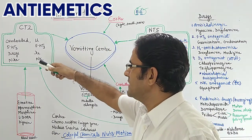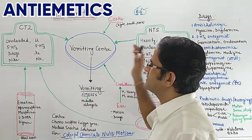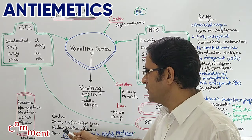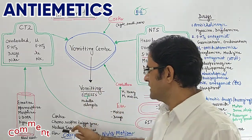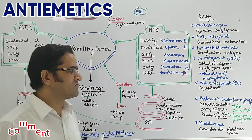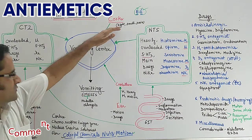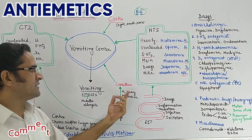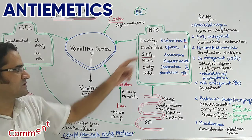The three or four main relay centers which send nerve impulses or information to the vomiting center to cause emesis are: cortex, chemoreceptor trigger zone (CTZ), nucleus tractus solitarius (NTS), and the ear. To remember these, we use the mnemonic: Colorful Chemicals Nuts Motion — Colorful represents cortex, Chemicals represents chemoreceptor trigger zone, Nuts represents NTS, and Motion is related to the ear.